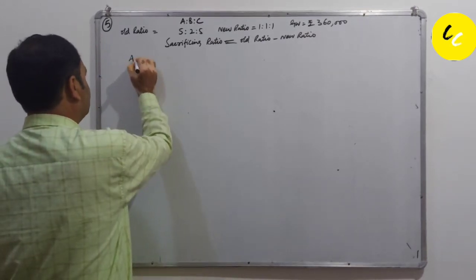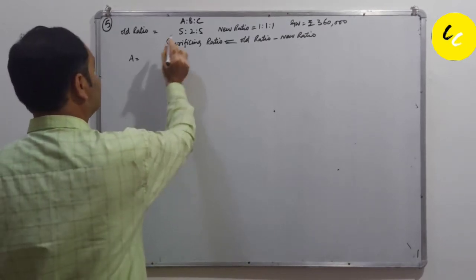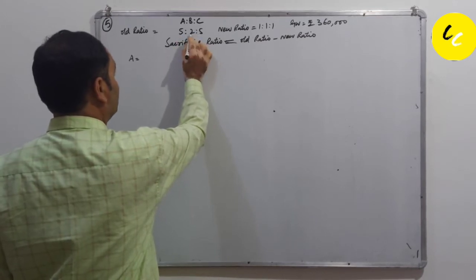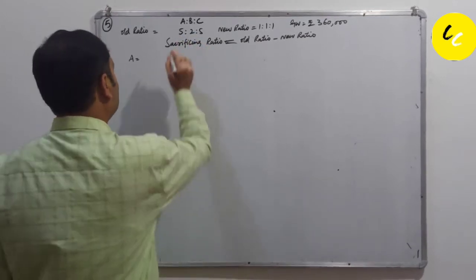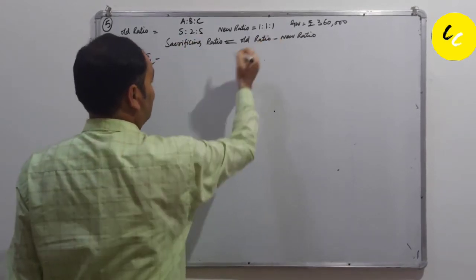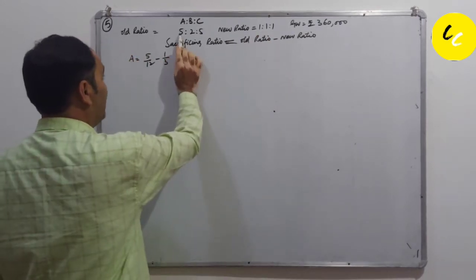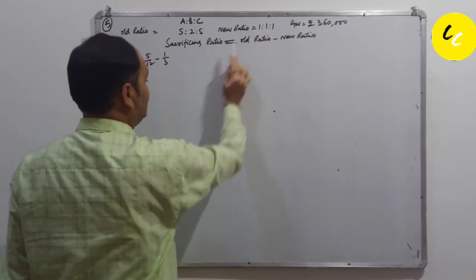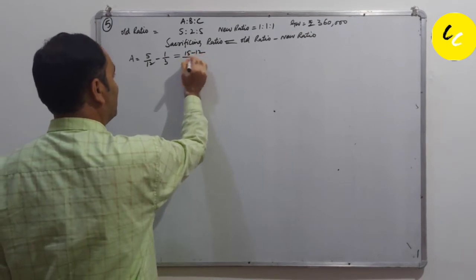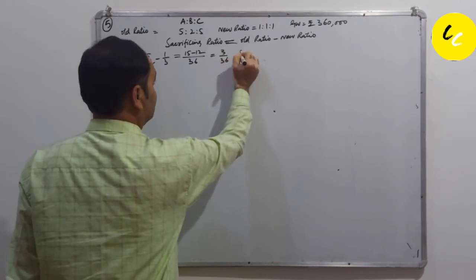First we will see the sacrificing ratio of A. That is old ratio 5 by 12 (5 plus 2 plus 5 equals 12) minus 1 by 3, which equals 5 by 12 minus 1 by 3, which is equal to 15 minus 12 by 36, which is equal to 3 by 36. This is sacrifice.